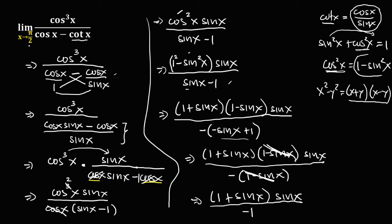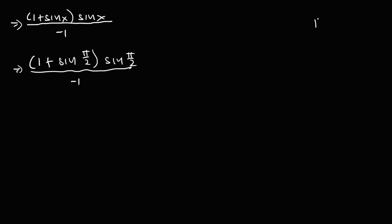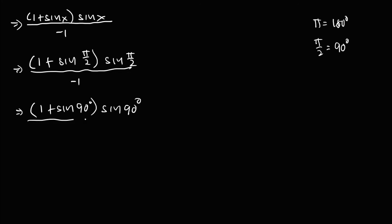From this simplified expression, as x approaches pi over 2, we substitute pi over 2 for x. We get 1 plus sine of pi over 2, times sine of pi over 2, over negative 1. Since pi equals 180 degrees, pi over 2 equals 90 degrees. So we rewrite this as 1 plus sine 90 degrees, times sine 90 degrees, over negative 1.